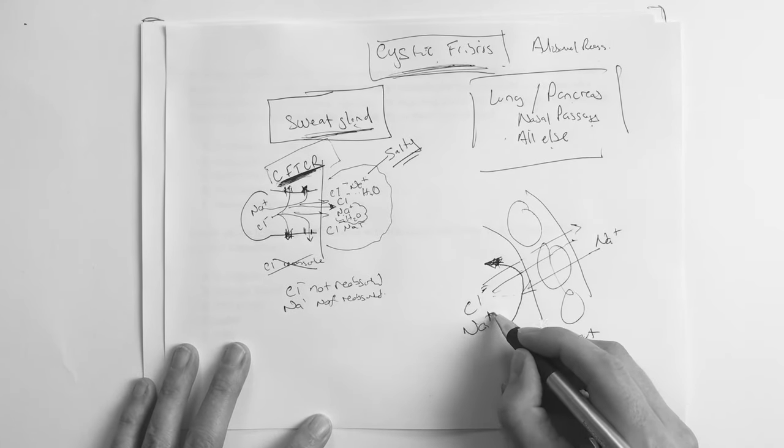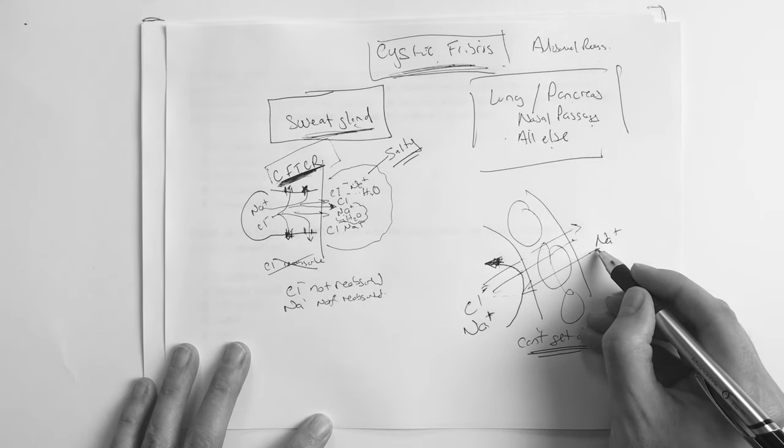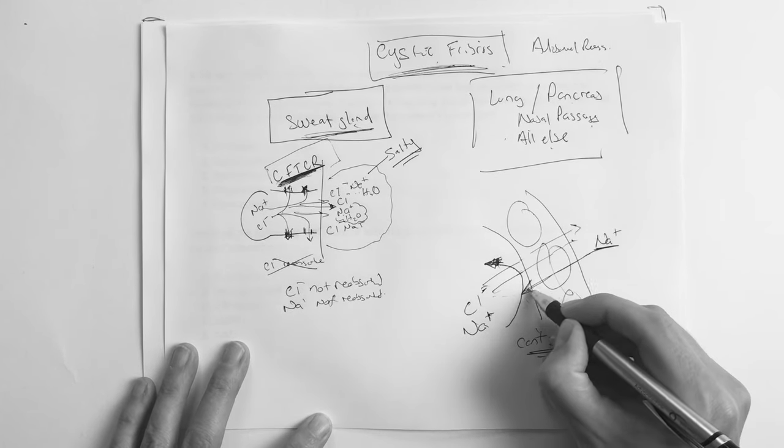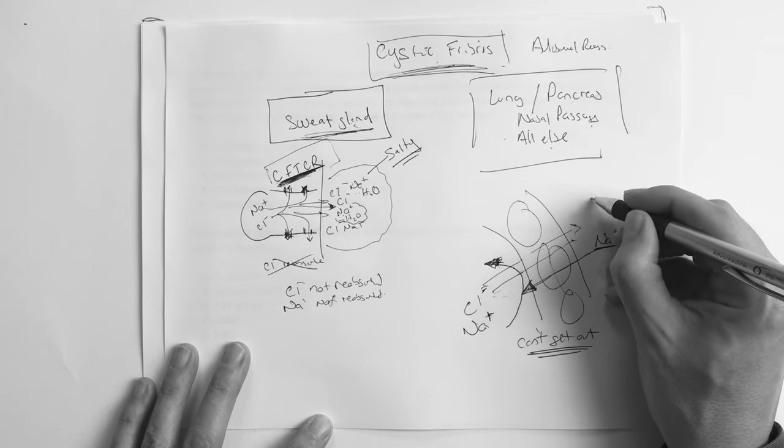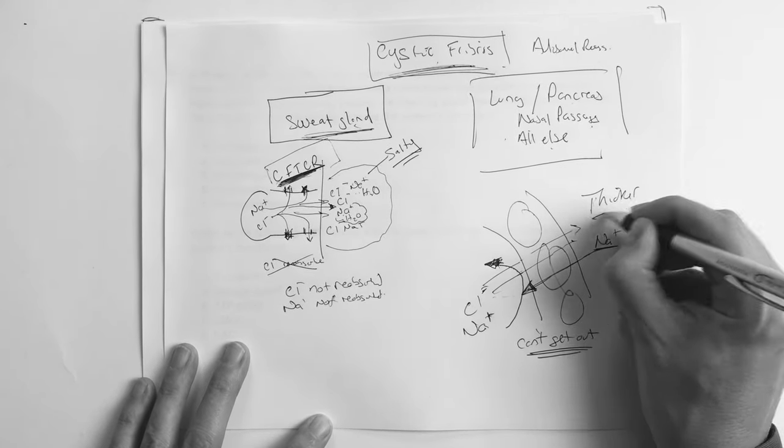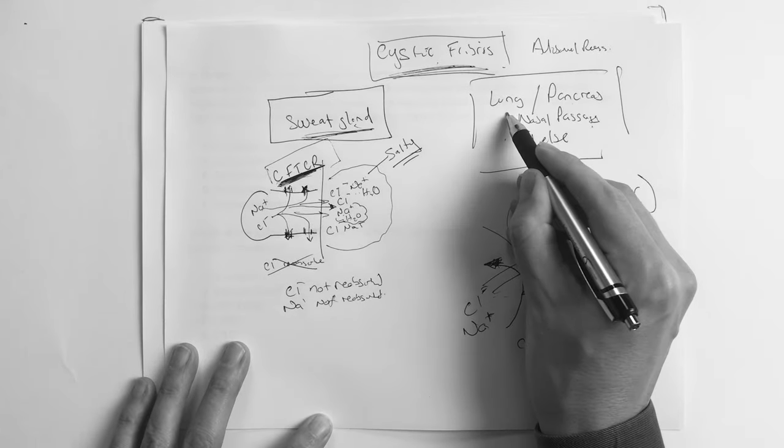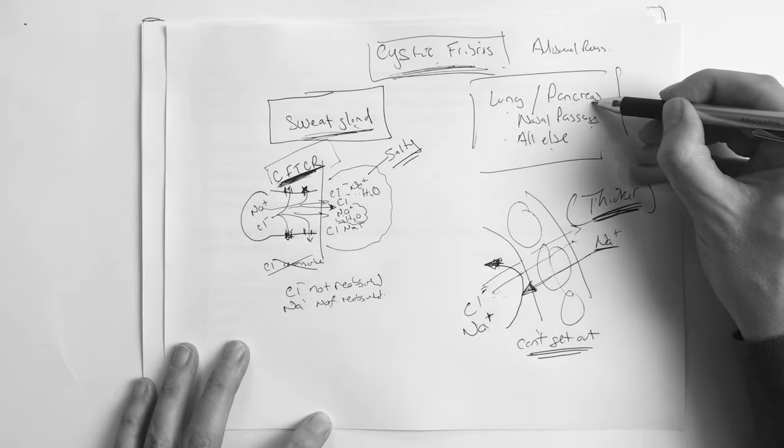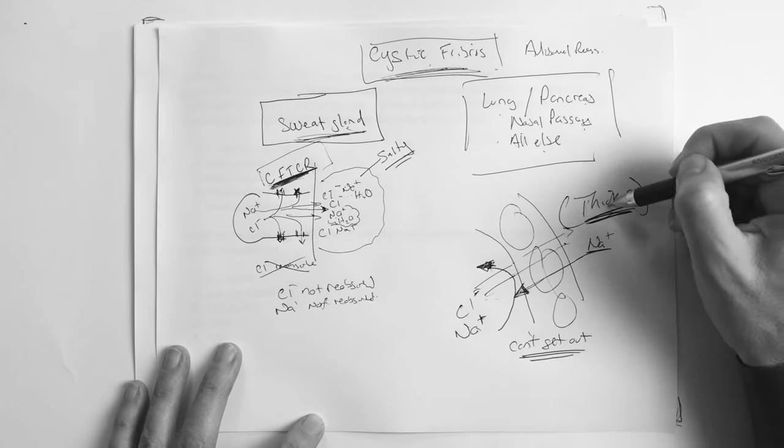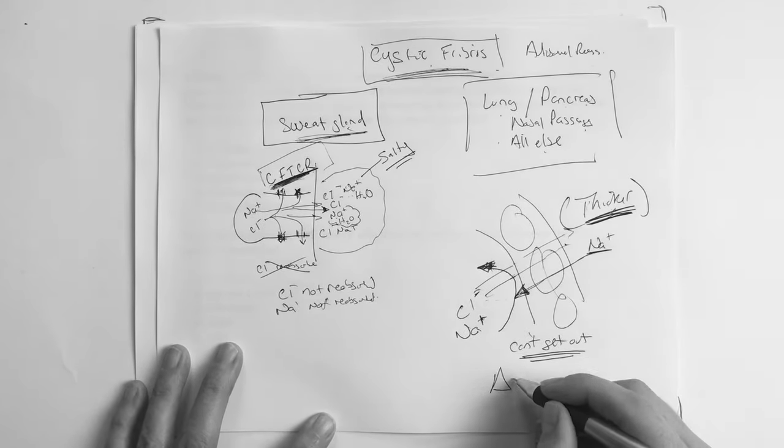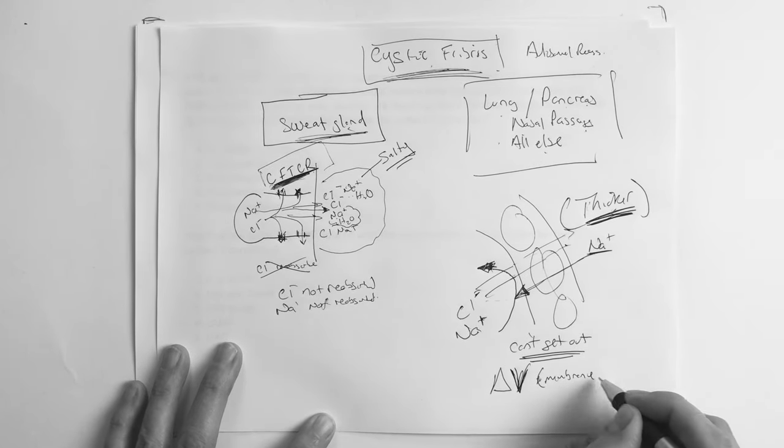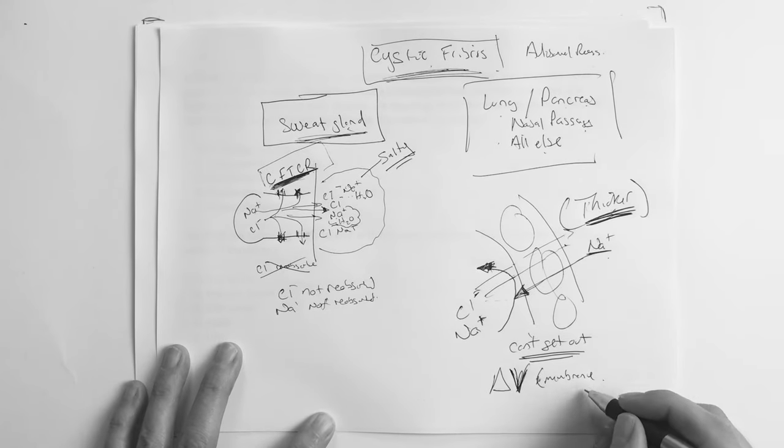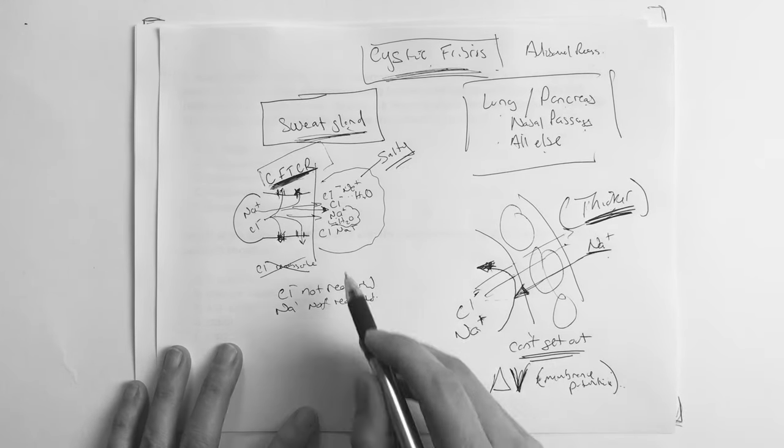So what happens? That means that if they can't get out, and then therefore the sodium that's out here gets drawn back in. And so what happens to the fluid that's on the outside? It gets thicker. And that's why the fluids in the lungs are thicker. That's why the fluid in the pancreas gets thick. It gets backed up, it gets blocked. Everywhere else it gets thicker, and that creates a big membrane potential. There's a big difference between what's on the inside versus the outside.